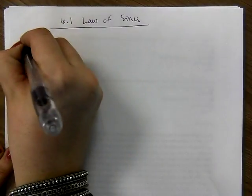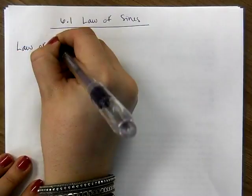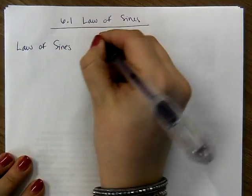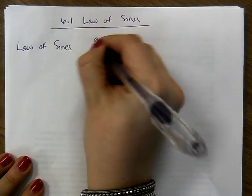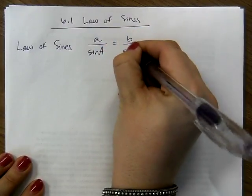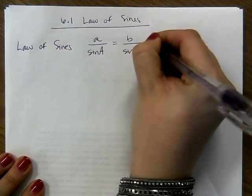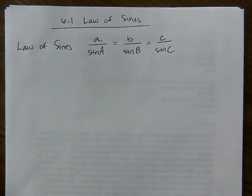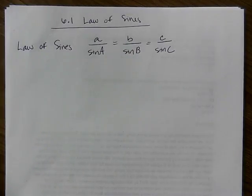We're going to do Law of Sines. You have seen this last year and the year before in geometry. Remember, the Law of Sines is a over sine A equals b over sine B, which is also equal to c over sine C. You just choose two of them and solve depending on the information that you're given.